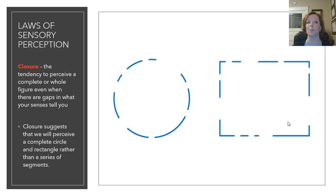So, closure is the tendency to perceive a complete or whole figure even when there are gaps in what your senses tell you. Your senses are telling you that there are incomplete lines, but your experience tells you that looking at these items, you are probably looking at a circle and a slightly squarish rectangle. Closure suggests that we perceive a complete circle and rectangle rather than a series of segments or broken lines.